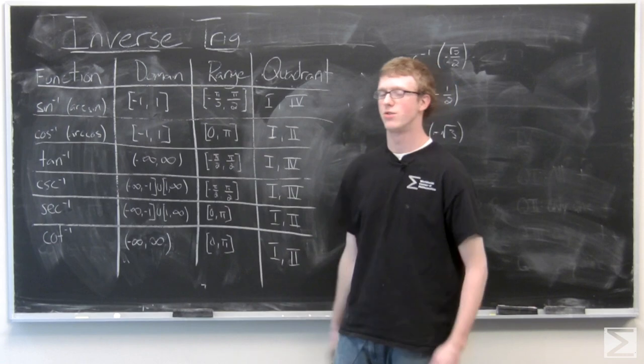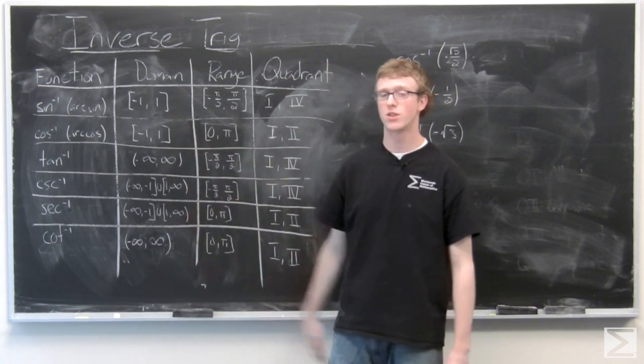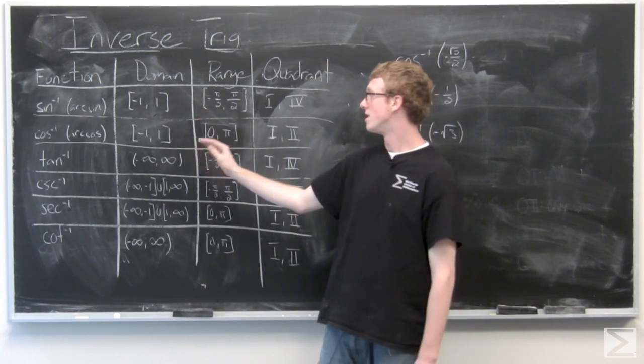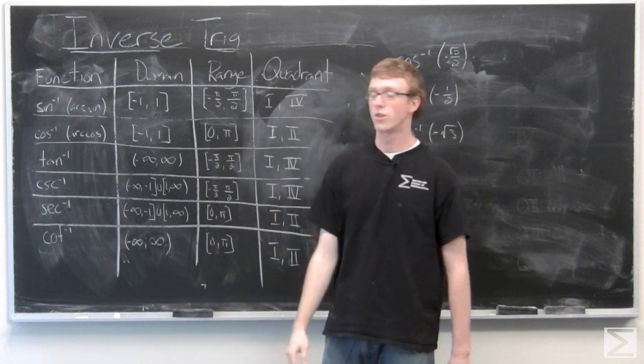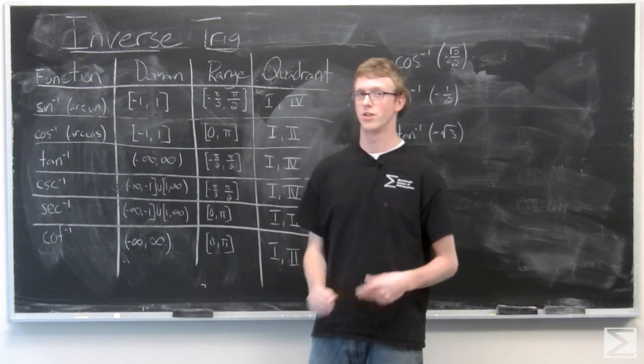So what we've done here is drawn out the table where the inverse functions exist and their range. Basically the domain and range of the normal trig functions are just flipped so that the inverse trig functions pass the horizontal line test.